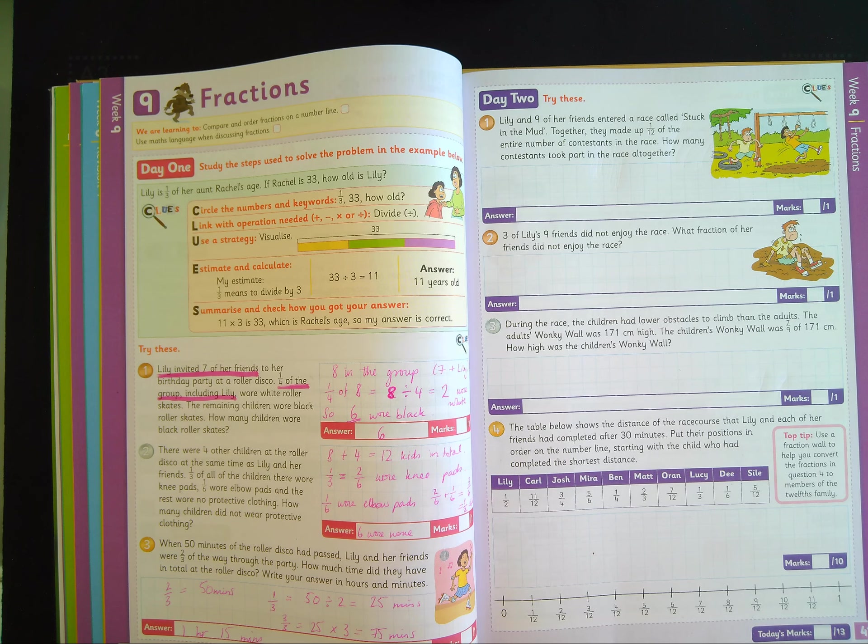Number three, during the race the children had lower obstacles to climb than the adults. The adults' wonky wall was 171 centimetres high. So the same height as me. The children's wonky wall was seven-ninths of 171 centimetres. How high was the children's wonky wall?